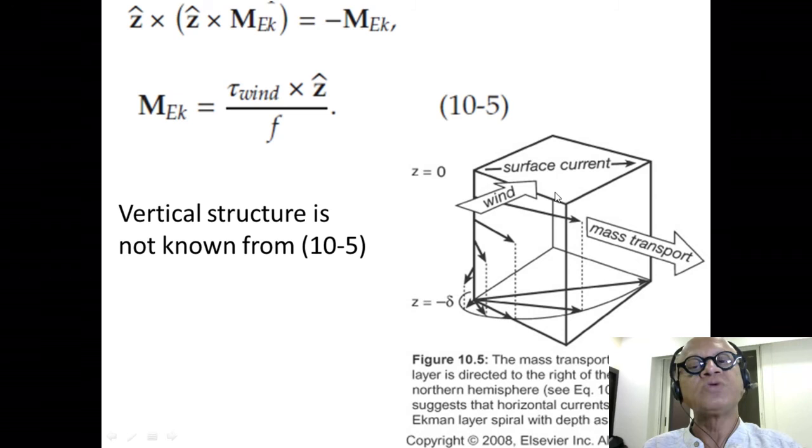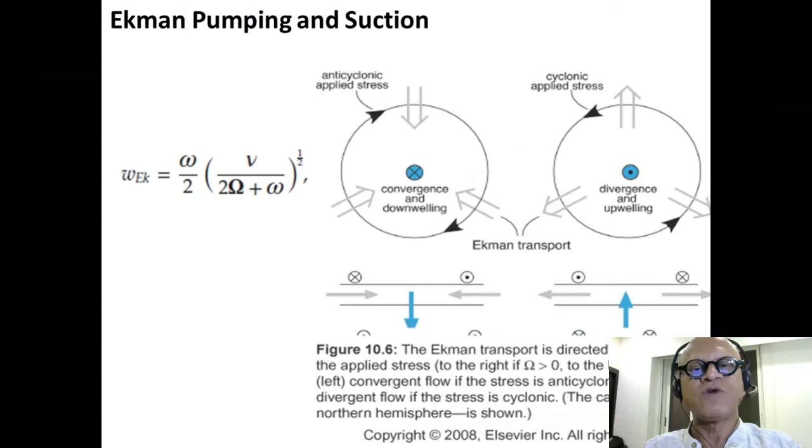The integrated transport—integrating the current (the speed at which each parcel moves)—is the averaged volume that is moving. Ekman transport in this case is perpendicular to the wind. So if wind goes in this direction, the Ekman transport in the Ekman layer would be perpendicular to the wind stress. That's the main message of this calculation by Ekman.